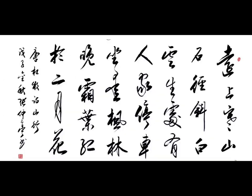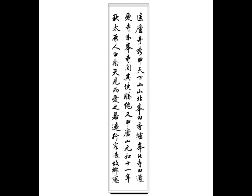The running script is the font between regular script and cursive script, and was created to make up for the slow writing speed of regular script and the difficulty of recognizing cursive script. The word 'xing' means to walk, so it is not as sloppy as the cursive script nor as straight as the regular script. Those with more regular style than cursive style are called xing kai, while those with more cursive style than regular style are called xing cao.